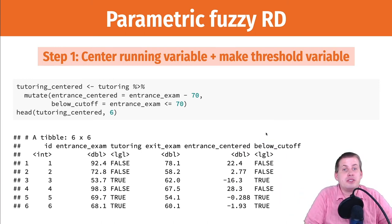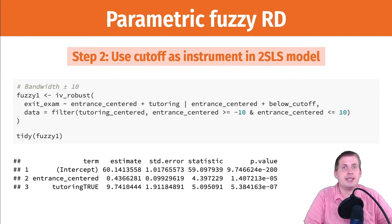So after you center the running variable, just like you do with normal regression discontinuity, and you have your instrument, which is being below or above the cutoff, you use that in a two stage least squares model. So here we're looking at a bandwidth of plus or minus 10. So we use IV robust instead of LM. And so the second stage here is our exit exam, that's our main outcome, is explained by entrance centered and tutoring.